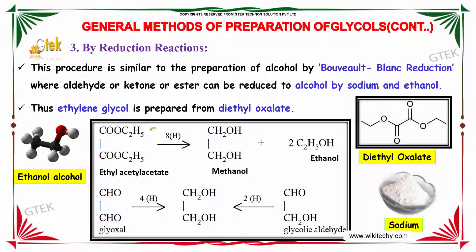The third category is by reduction reactions. This procedure is similar to the preparation of alcohol by Bouveault-Blanc reduction, where aldehydes, ketones, or esters can be reduced to alcohols by sodium and ethanol. Ethylene glycol is prepared from diethyl oxalate. In this reaction, diethyl oxalate on addition of 8 moles of hydrogen forms ethylene glycol and 2 moles of ethanol. On further reaction with 4 hydrogen molecules, we obtain glycolic aldehyde as an intermediate.